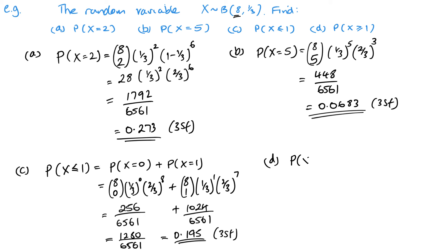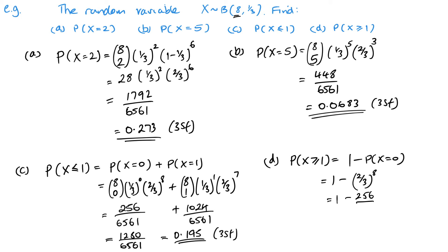The final part is P(X ≥ 1). That's going to be 1 minus P(X = 0), because taking out the probability where X equals zero leaves one and above. So that's 1 minus two thirds to the power eight, or 1 minus 256 over 6561, giving 0.961 to three significant figures.